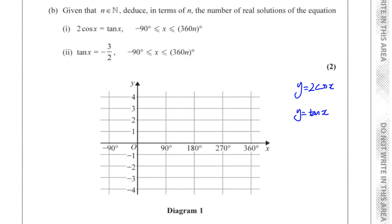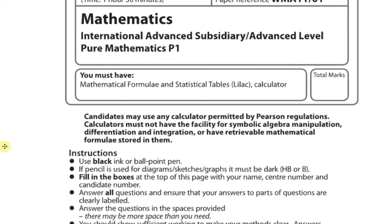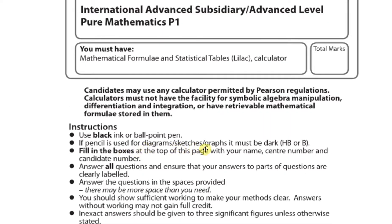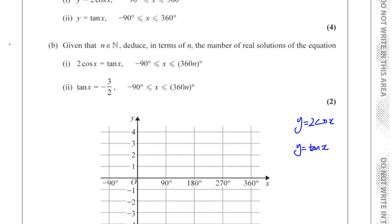One of the things we need to be aware of is that the instructions say use black ink or ballpoint pen. I've been using blue, but you've got to use black in your exam. If pencil is used for diagrams, sketches or graphs, it must be a dark HB or B pencil. So make sure you take HB or B pencils in because your diagram should be done in pencil. That will be better for you in case you make mistakes.